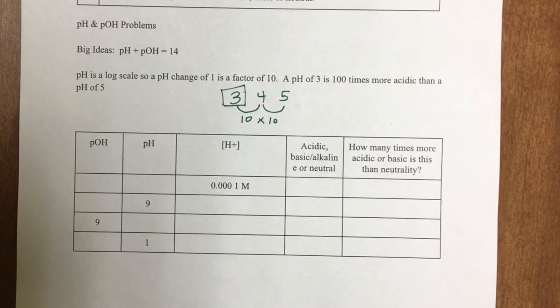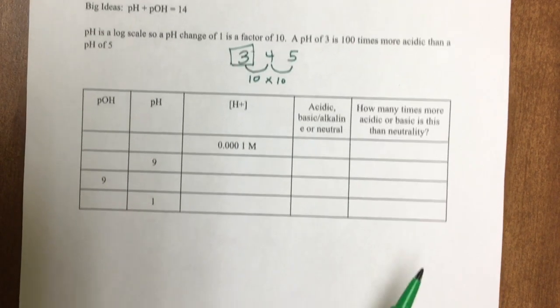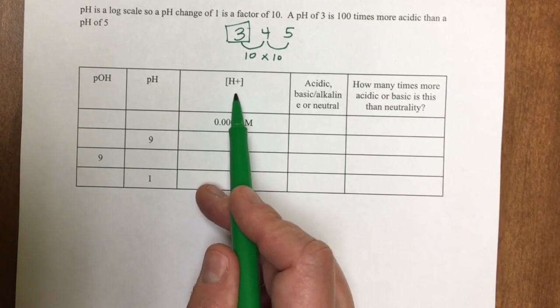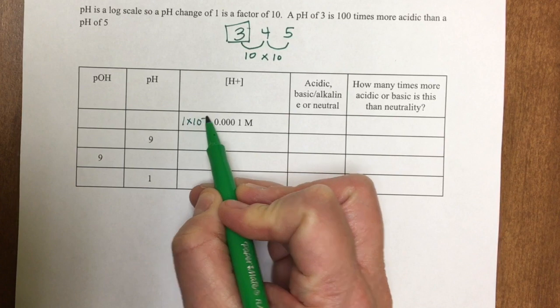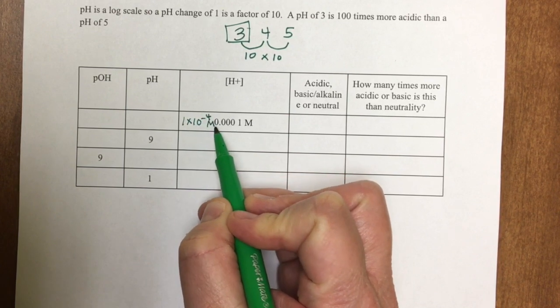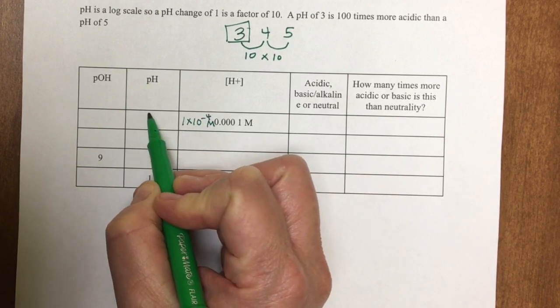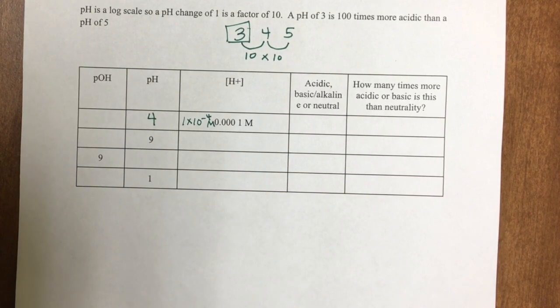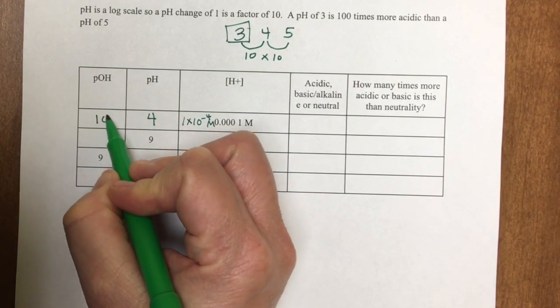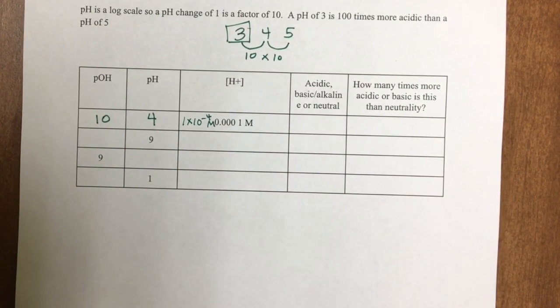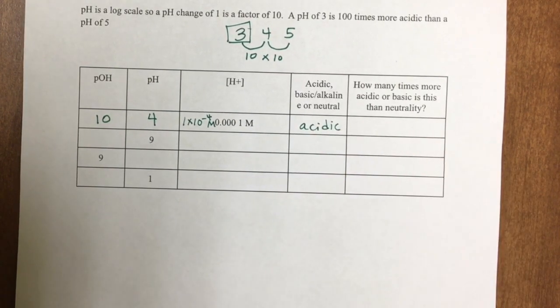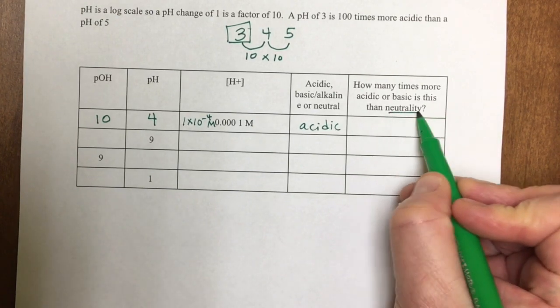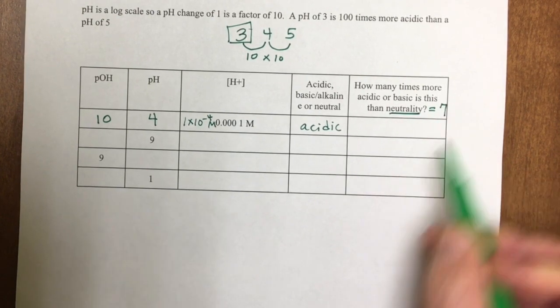Some sample problems on the bottom of the page. First, the hydrogen ion concentration can be rewritten as 1 times 10 to the minus 4 molarity, which tells me the pH is 4, so the pOH is 10. pH less than 7 means it is acidic. How many times more acidic or basic is this than neutrality? Neutrality is 7.